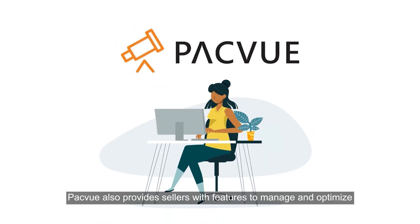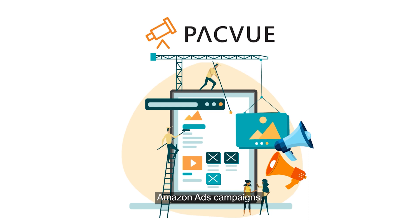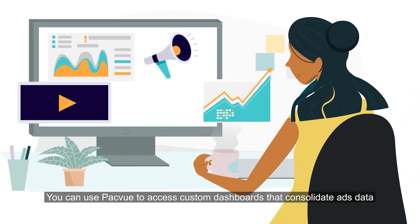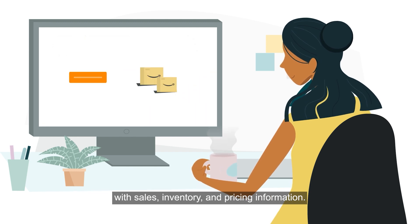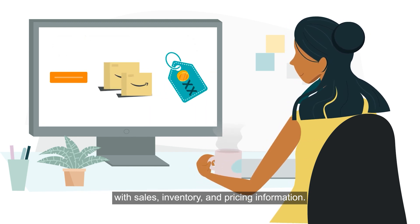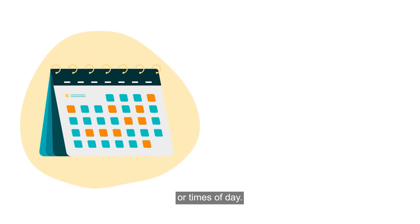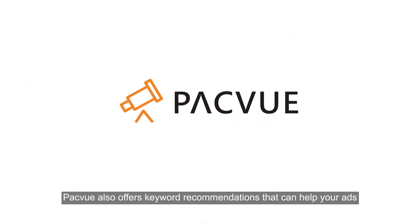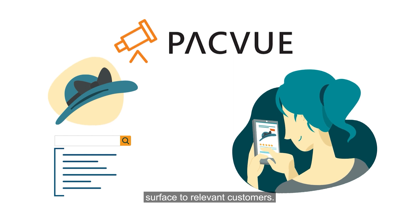PackView also provides sellers with features to manage and optimize Amazon ads campaigns. You can use PackView to access custom dashboards that consolidate ads data with sales, inventory, and pricing information. Or you can use PackView to help your ads run on specific days of the week or times of day. PackView also offers keyword recommendations that can help your ads surface to relevant customers.